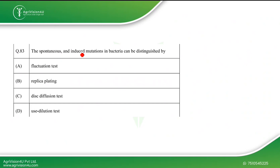The next question asks how spontaneous and induced mutations in bacteria can be distinguished. Mutation involves changes such as addition, deletion, or mismatch events. The fluctuation test shows that mutations occur randomly in growing cultures and are not induced by the selection agent.